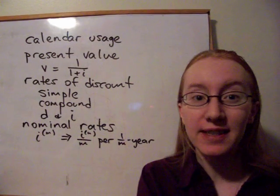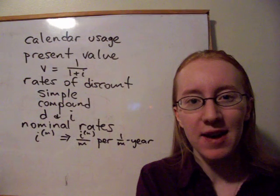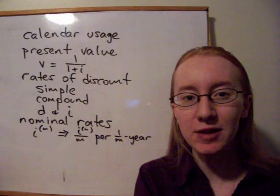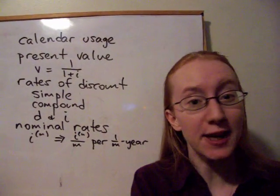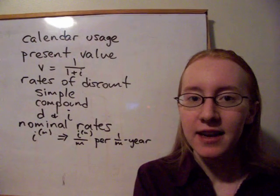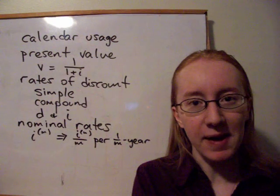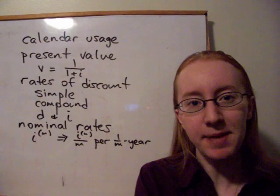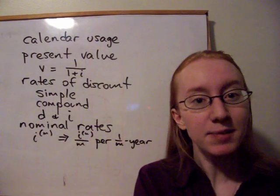So the first thing we looked at was calendar usage, which is a way to figure out how much interest is due to somebody when we're talking about a fractional period of a year, so some period of less than a year. There are three rules for different methods to calculating this time.